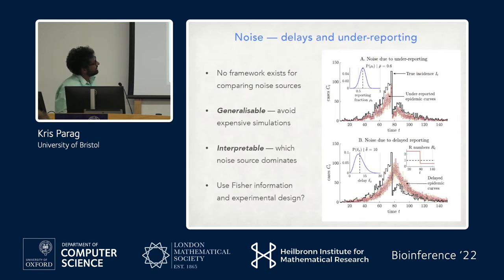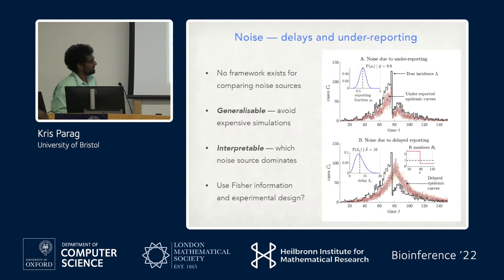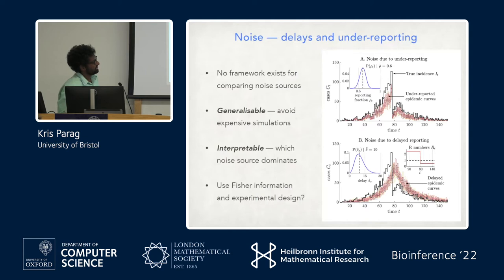As an example: say we had a true number of infections in black, and we apply some under-reporting via a sampling distribution to get a bunch of curves representing cases. We could do a similar thing but apply a delay of some kind to get another set of curves. We want a way to relate these two noise sources to each other and understand which might be more important.